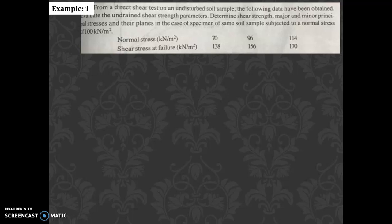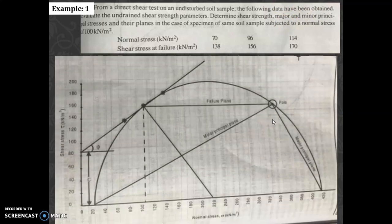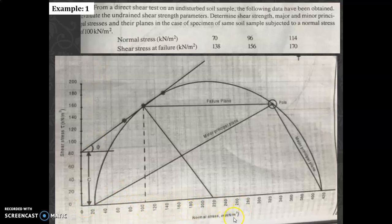First, you have to draw the graph — normal stress versus shear stress — then mark all the normal stress and shear stress values and draw the failure envelope. From that you will get C and φ. After that you can find the major and minor principal stresses. The difference from yesterday's problem is that here normal stress and shear stress are given directly, so the values are already in stress units. The x-axis is normal stress (σ, kN/m²) and y-axis is shear stress (τ, kN/m²).